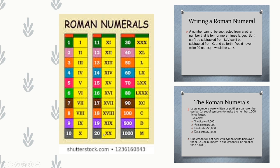Continuing: 30 is written as XXX. Whereas 40 is written as XL — because a Roman numeral cannot be repeated more than 3 times. L stands for 50 and X stands for 10, so 50 minus 10 equals 40. 50 is L. 60 is LX: L stands for 50 and X for 10, so 50 plus 10 equals 60.